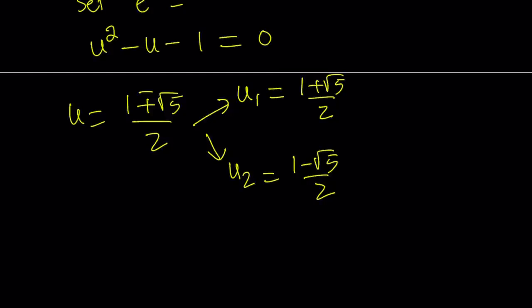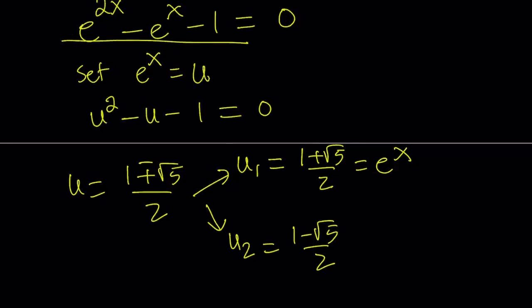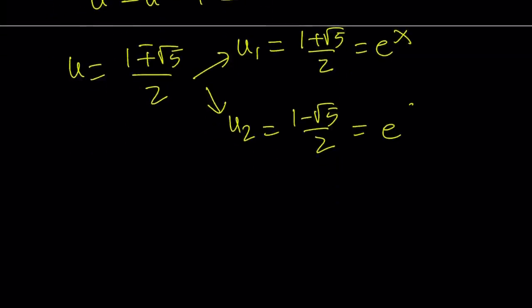Now notice that we're going to set both of these equal to e^x because by definition e^x is equal to u, right? Therefore, we're just going to set u values equal to e^x. But there's a problem with the second one because (1 - √5)/2, obviously √5 is greater than 1. So this is less than 0. But e^x can never be 0. I mean, it can't be 0, but it can't be negative either. So it's always positive. So we're not going to get a valid solution from here.